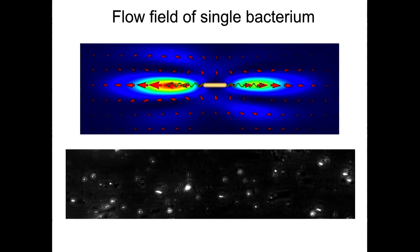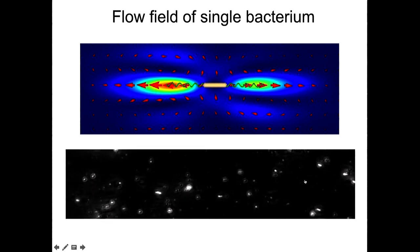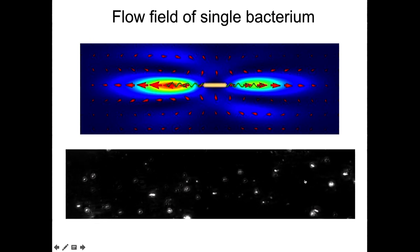And in this movie, for example, you can see that this fluorescent tracer, this white spot, will be transported by the bacteria while the bacteria is quite far, 100 microns from this particle. Sorry, it's not visible. But this particle is moved by the bacteria while the bacteria is quite far from this particle but at the same line.